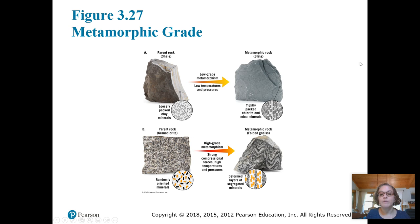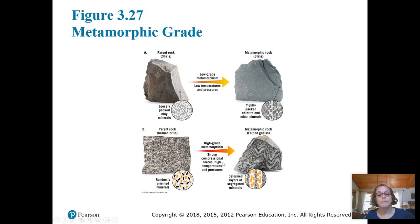Another example: a parent rock like granite or diorite — a felsic, intrusive igneous rock with large crystals and light-colored minerals — has randomly oriented minerals. After high grade metamorphism with really strong forces, we get the metamorphic rock gneiss. In gneiss, layers separate out by type of mineral, and those strong compressional forces align different minerals into bands of similar minerals. Beyond that, the rock is folded, giving us an idea of the direction in which it was compressed — probably during a mountain-building event.